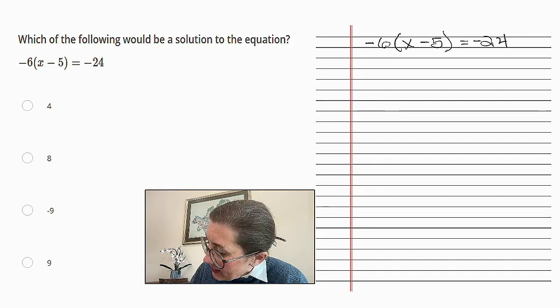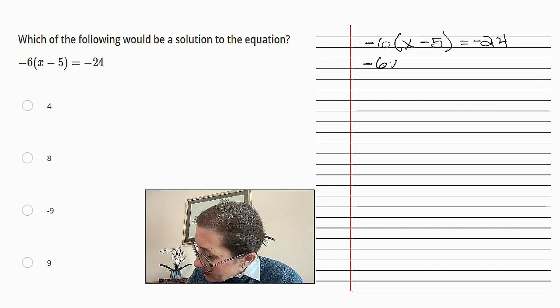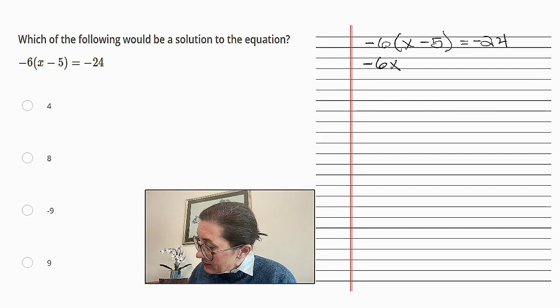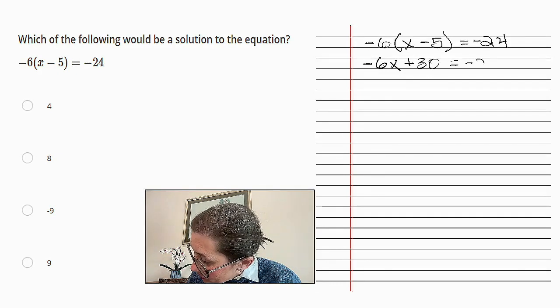Our first step is -6 times x is -6x. -6 times -5 is +30, equals -24.